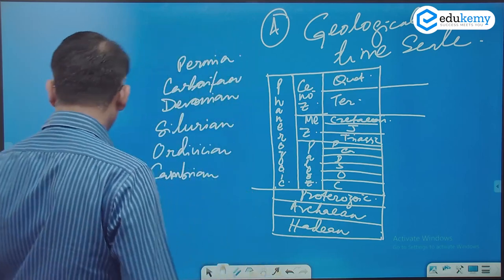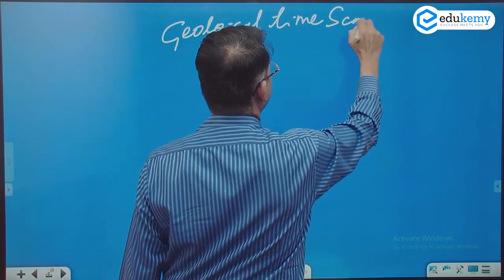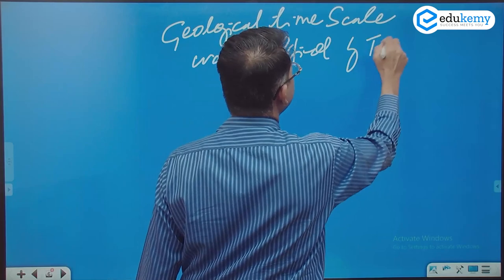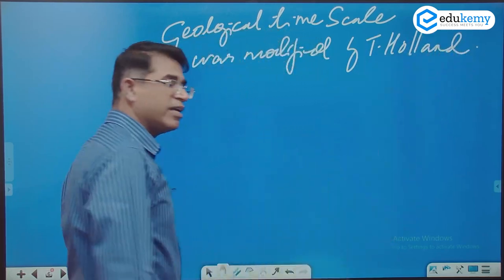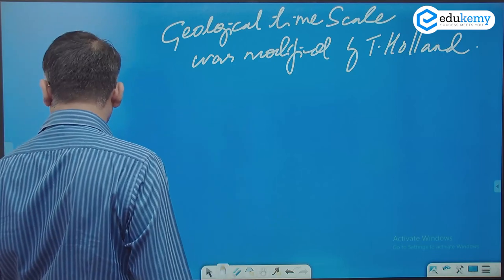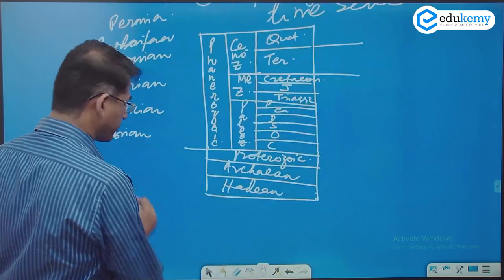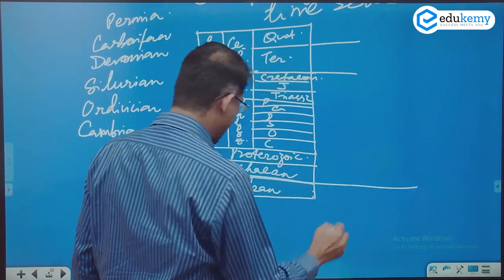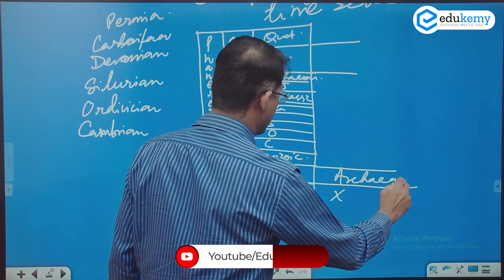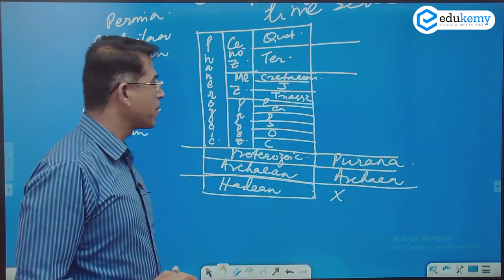The geological time scale was modified by T. Holland, one of the early geologists who modified it for the Indian scheme. In the Indian scheme, we do not have Hadean. Archean is still called Archean, and Proterozoic is called Purana times.